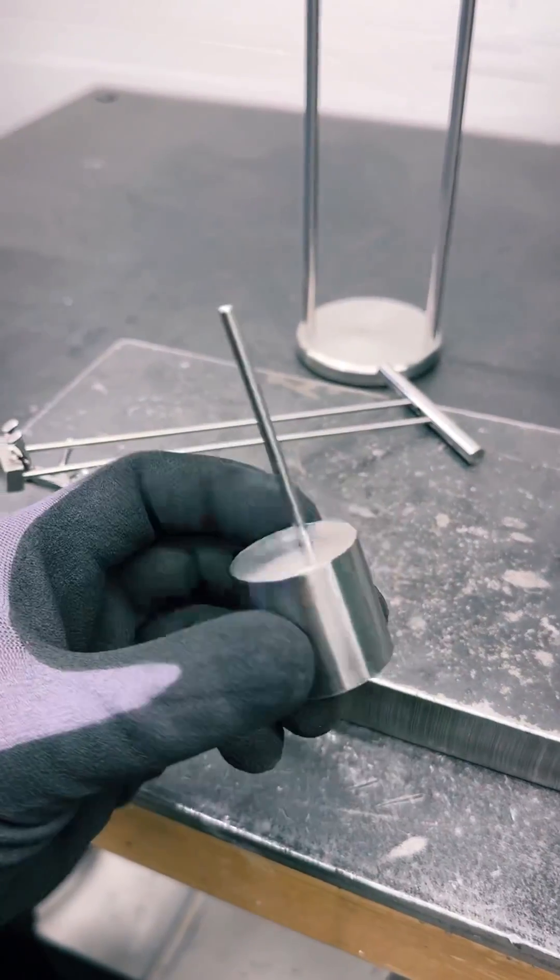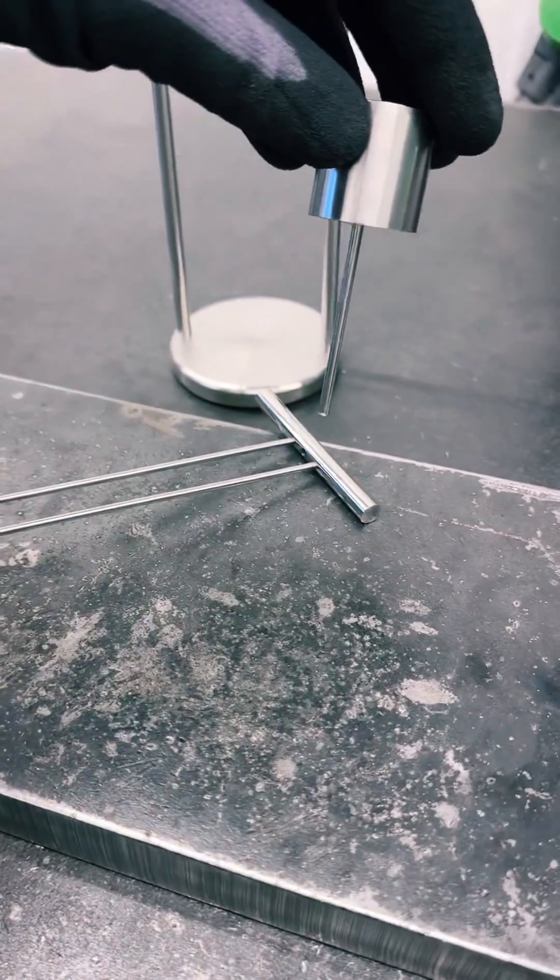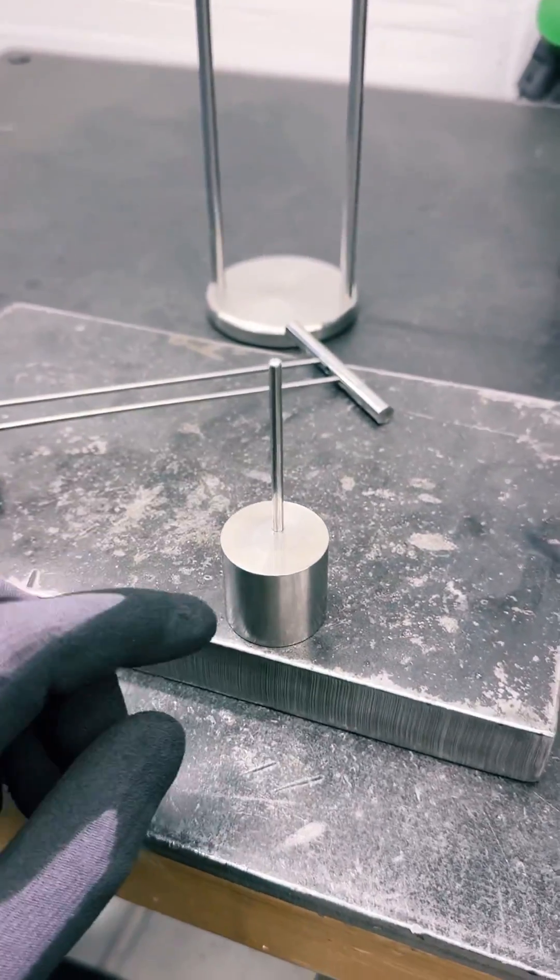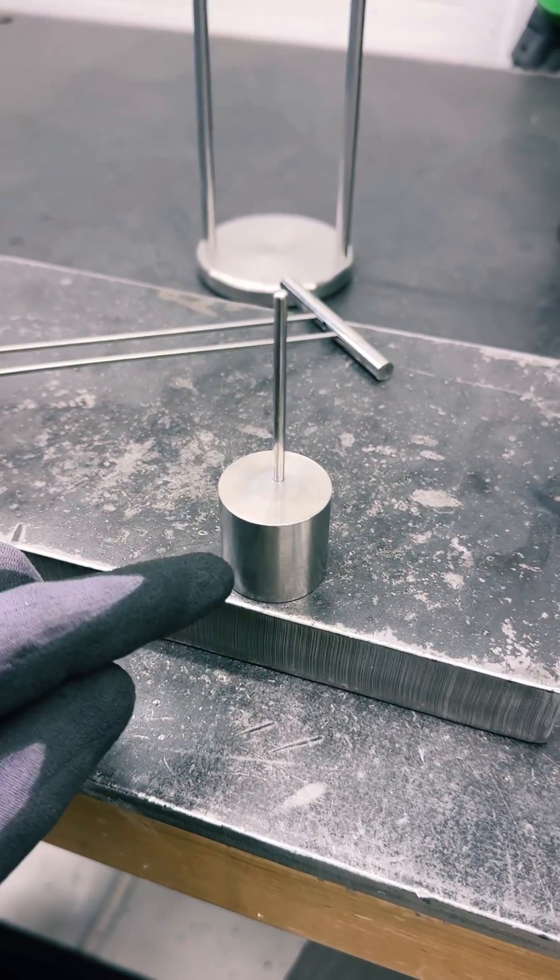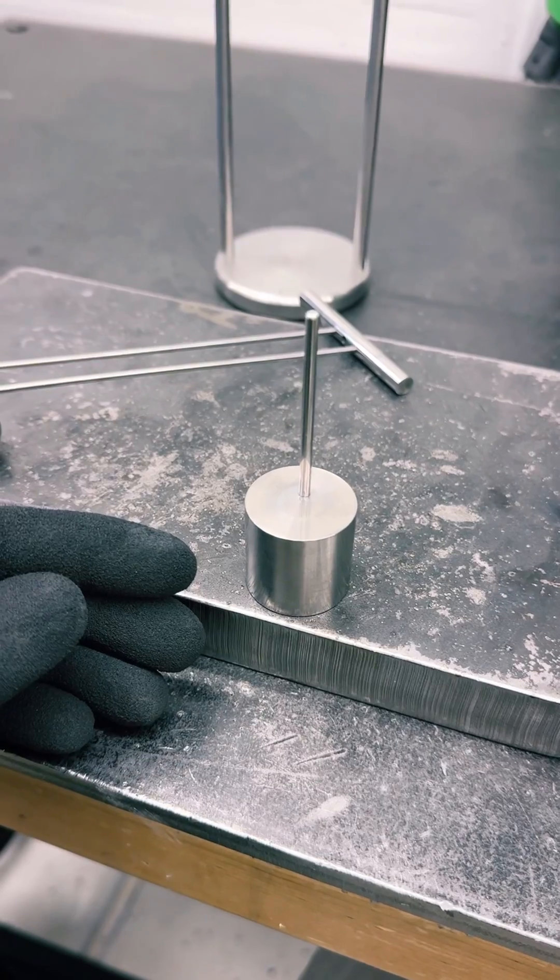And then we have this counterweight here that will go above the little swinging kid. Granted, this weight is a lot heavier, therefore the arm needs to be shorter because that weight will have a much greater effect with a shorter arm.